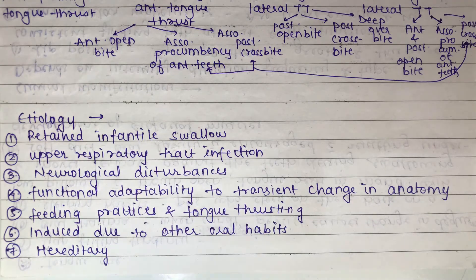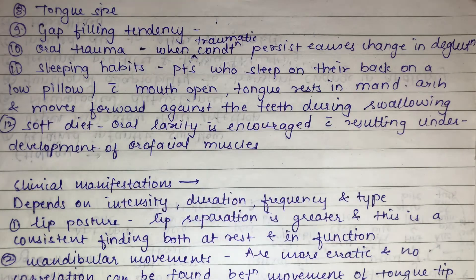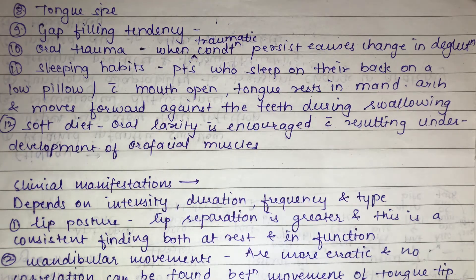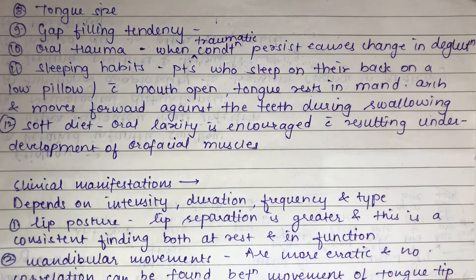Hereditary or genetic factors can lead to tongue thrusting. Tongue size is also a factor — macroglossia or microglossia means the tongue is inadequate to fill the oral space, resulting in forward thrusting. Gap-filling tendency is another factor: any space around the dental arches not occupied by teeth will tend to be filled by the tongue. Oral trauma that persists for sufficient time can cause changes in the deglutition pattern.